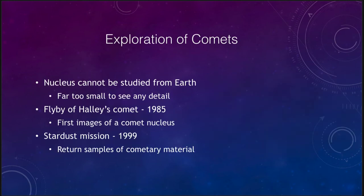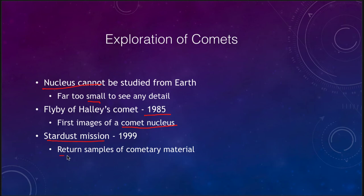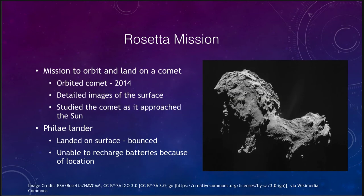So how have we explored comets? The problem is that the nucleus cannot be studied from Earth — it's too small to see any detail. The first explorations were of Halley's Comet in 1985, the last time it came close to the inner solar system, and gave us the first images of a comet nucleus. There was also the Stardust mission in 1999, which went out to actually gather samples of cometary material and bring them back to Earth for study. The best study of a comet to date has been the Rosetta mission, which orbited and landed on a comet. In 2014, the Rosetta spacecraft went into orbit around the comet, and we can start to see some of the structures of the nucleus that we never really had a chance to see before the mid-1980s.